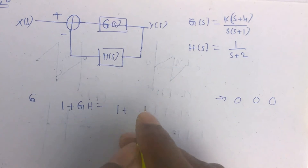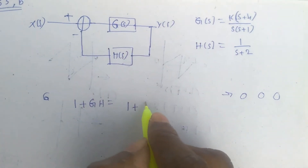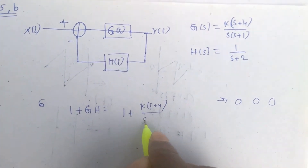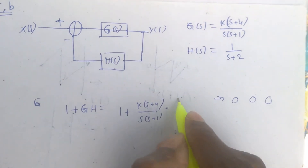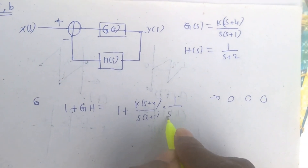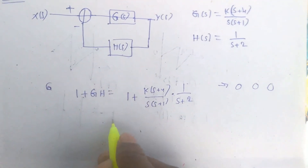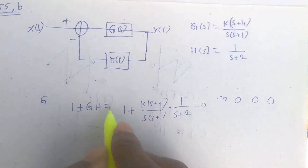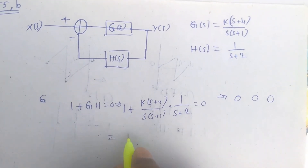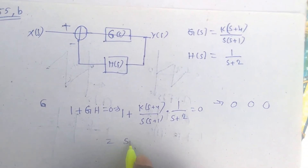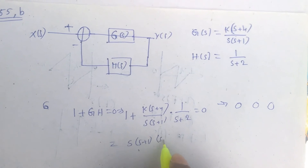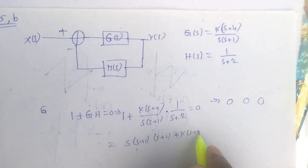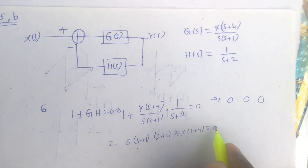So 1 + GH = 0, where G = k(s+4) / [s(s+1)] and H = 1/(s+2), giving us: s(s+1)(s+2) + k(s+4) = 0.